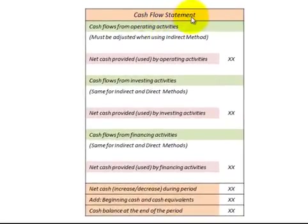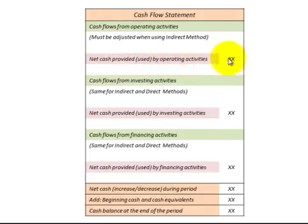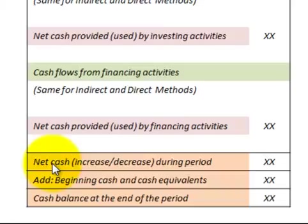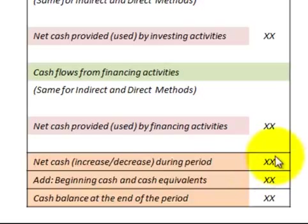Looking at our complete cash flow statement, we have cash flows for operating activities, investing activities, and financing activities, with a full listing of cash changes for each. We total up the net cash provided or used for each activity, then determine the net cash increase or decrease during the period. We add back the beginning cash and cash equivalents, and that total gives us our cash balance at the end of the period — which is what the cash flow statement is calculating.